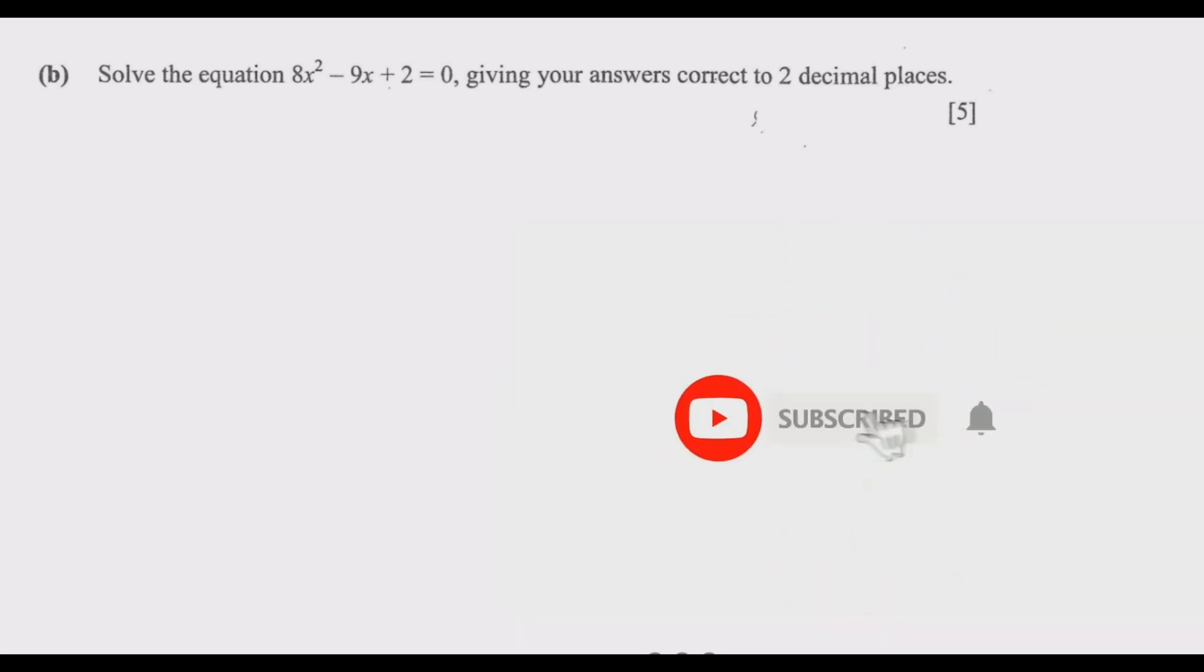Since we are giving the answers correct to two decimal places, we need to use the standard quadratic formula: x = (-b ± √(b² - 4ac)) / 2a.